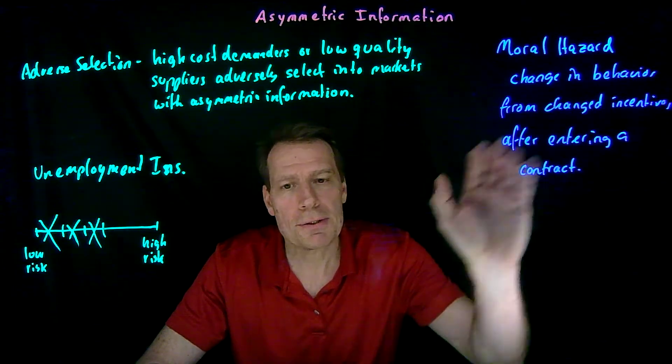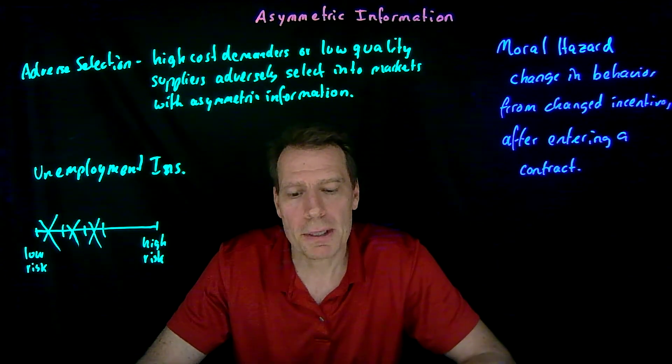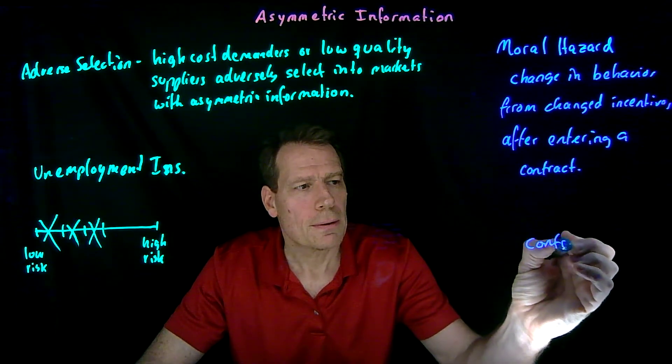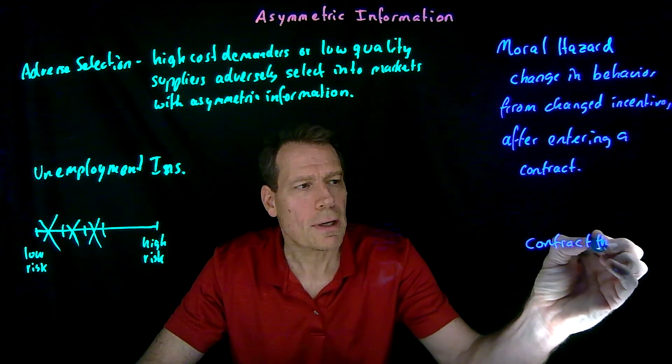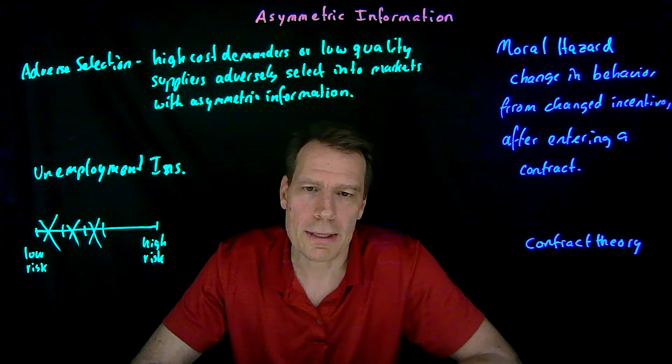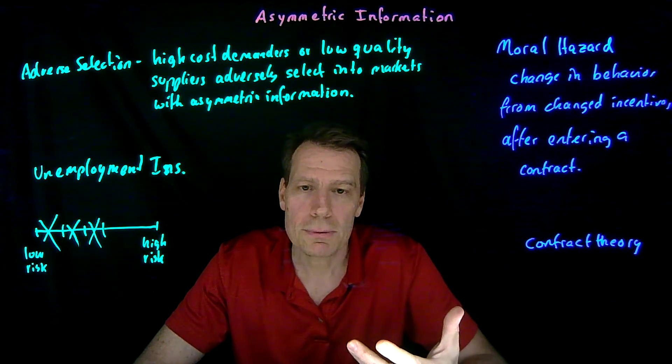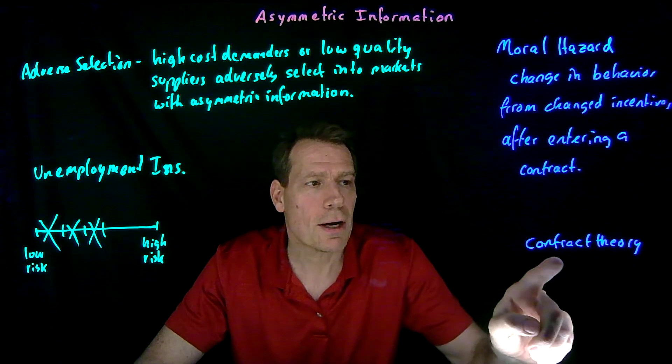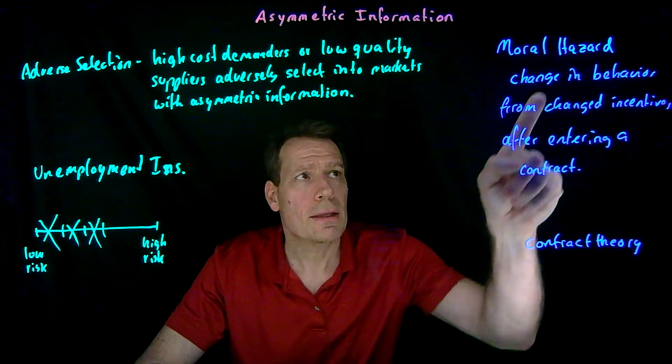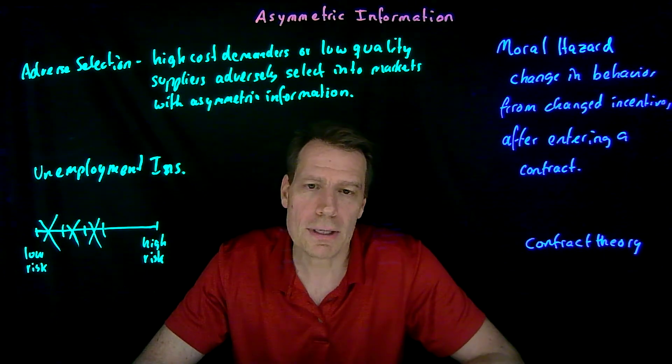It's also a big issue in a whole area of economics called contract theory. Contract theory is all about how we design optimal contracts. One of the big issues that contract theory deals with is how we write contracts in such a way as to minimize the moral hazard that these contracts give rise to.